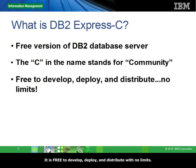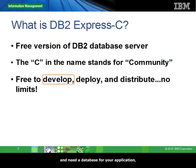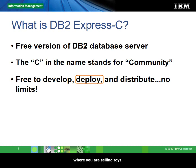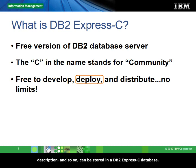It is free to develop, deploy, and distribute with no limits. Free to develop means that if you're an application developer and need a database for your application, you can use DB2Express-C for free. Free to deploy means that you can use DB2Express-C in production for free. For example, you may have an e-commerce website where you are selling toys. The pictures of the toys you sell, along with the price, description, and so on, can be stored in a DB2Express-C database.